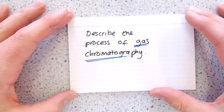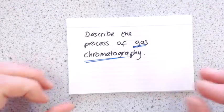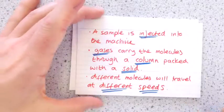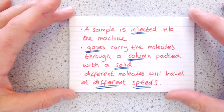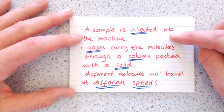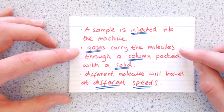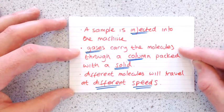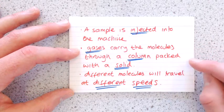Describe the process of gas chromatography. Now this is actually a really complicated process. So for GCSE, just a simplified version. The first thing you do is that you inject a sample of your material into the machine. And then inert gases carry the molecule through a column that's packed with a solid.